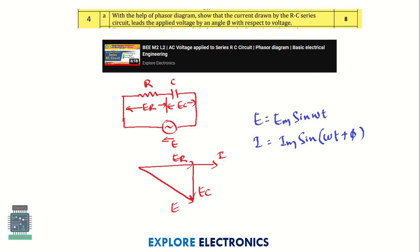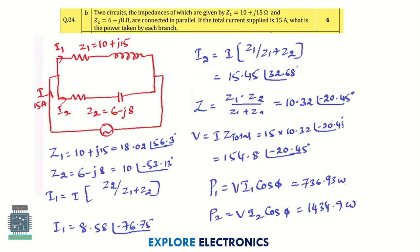There is a video on RC circuit when AC voltage is applied — you need to write the circuit and phasor diagram. Then there is a problem on RL and RC connected in series and parallel. They ask you to calculate the power taken by each branch, P1 and P2. I have solved this — you can go through it.